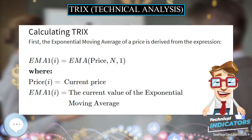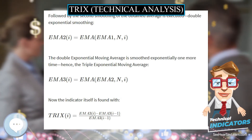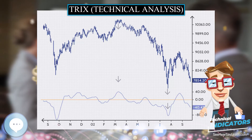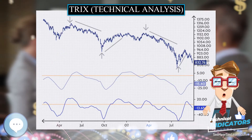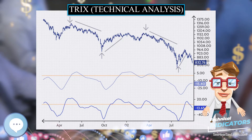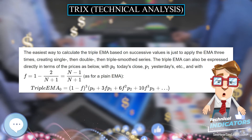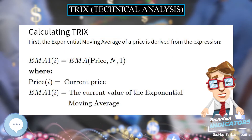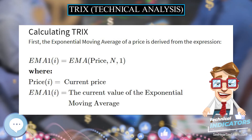In the direct formula, p0 is today's close, p1 is yesterday's close, etc. The smoothing factor is defined as f = (n−1)/(n+1), equivalently f = 1 − 2/(n+1).